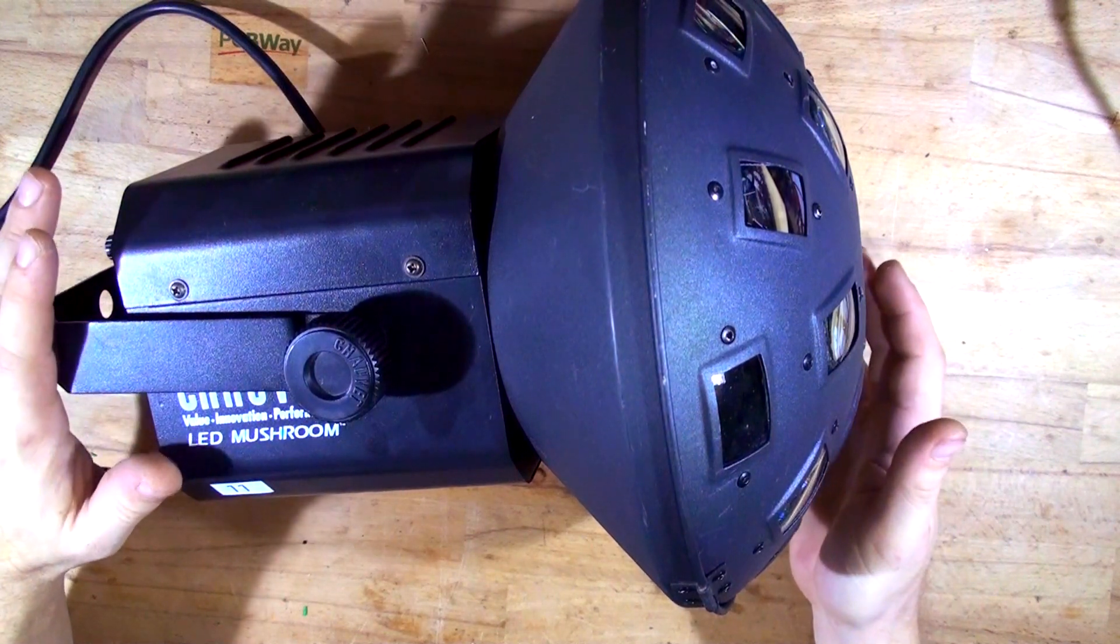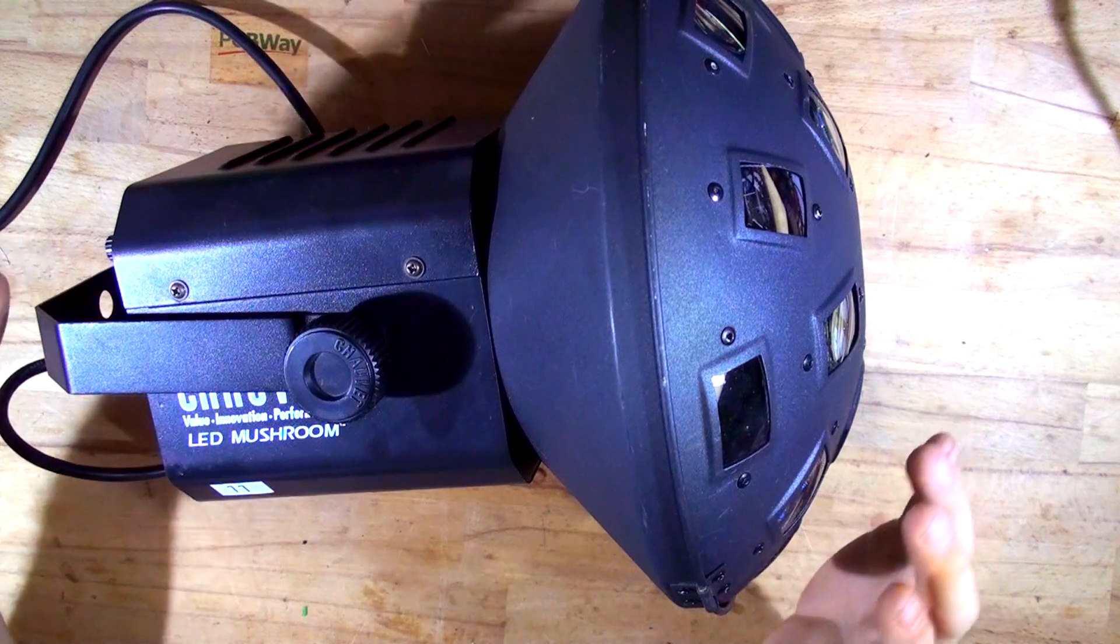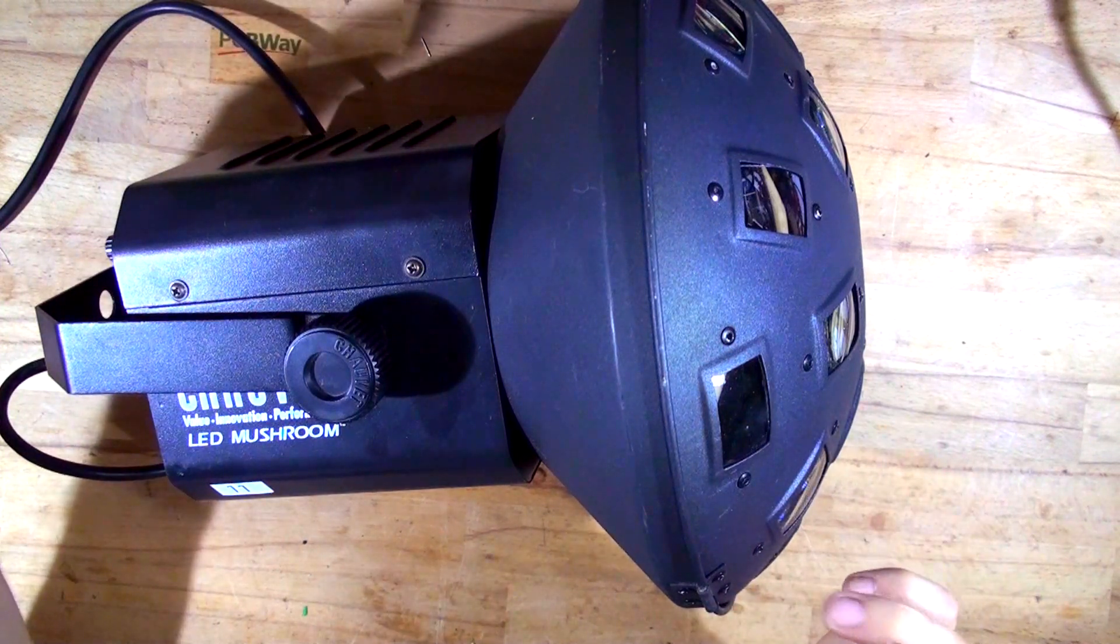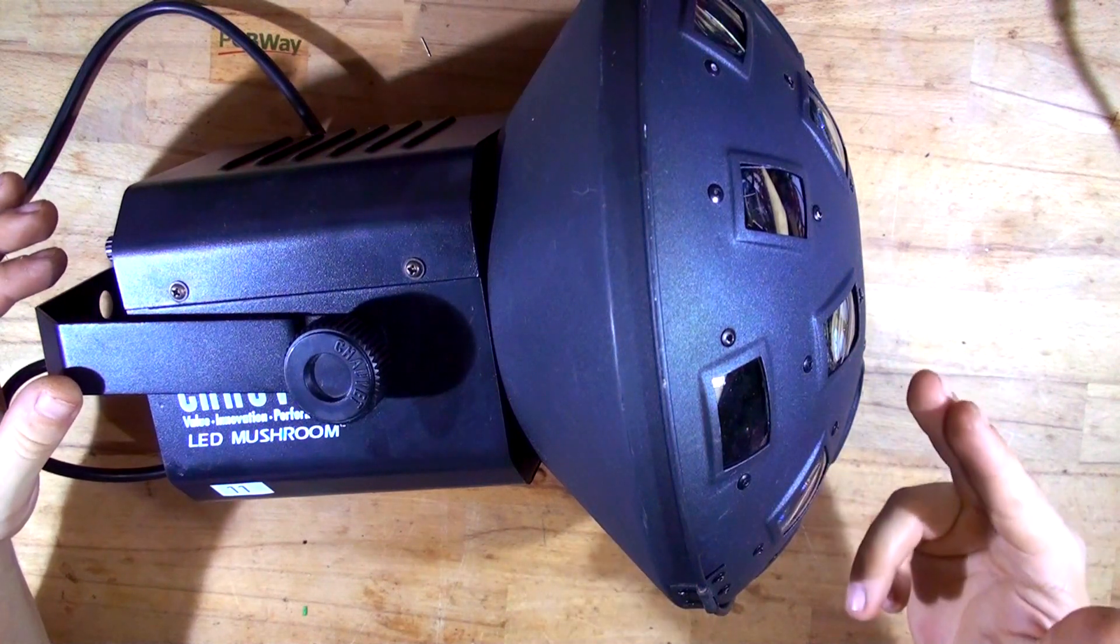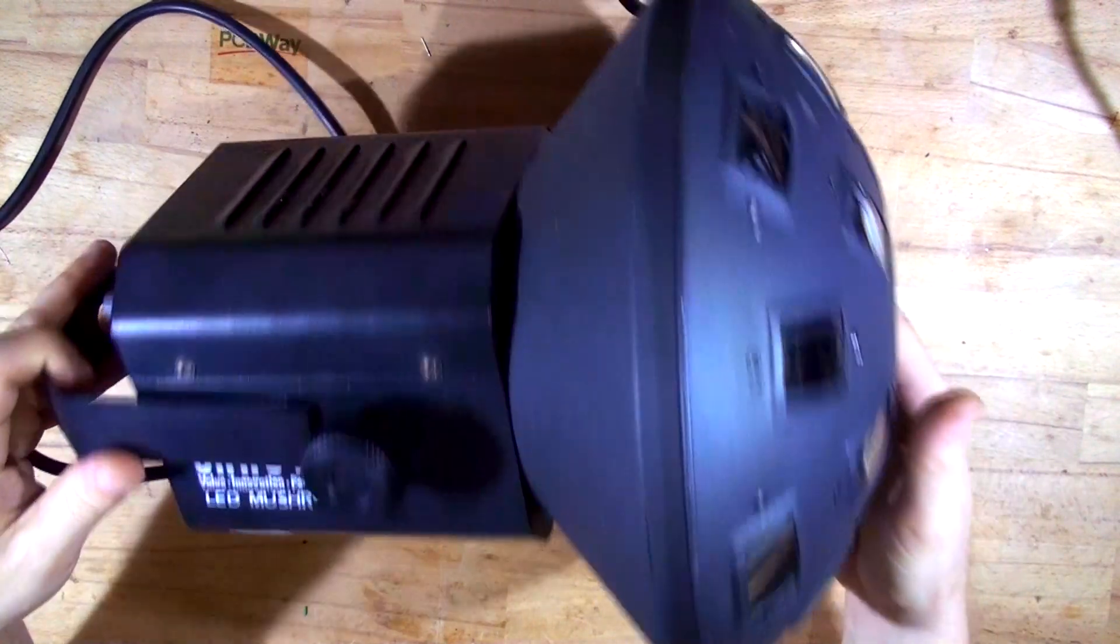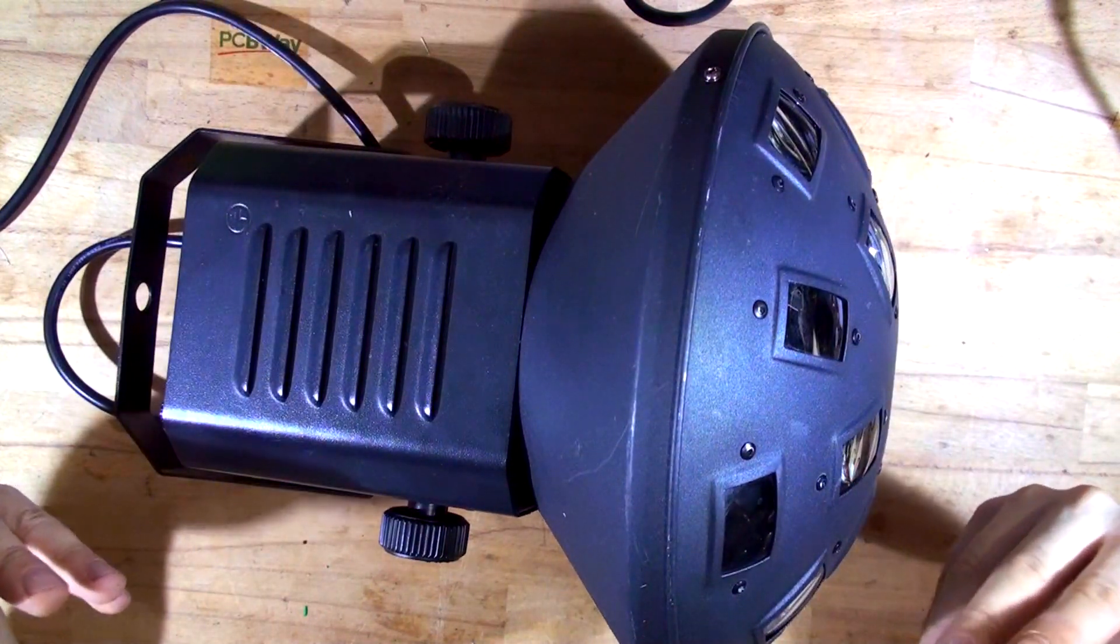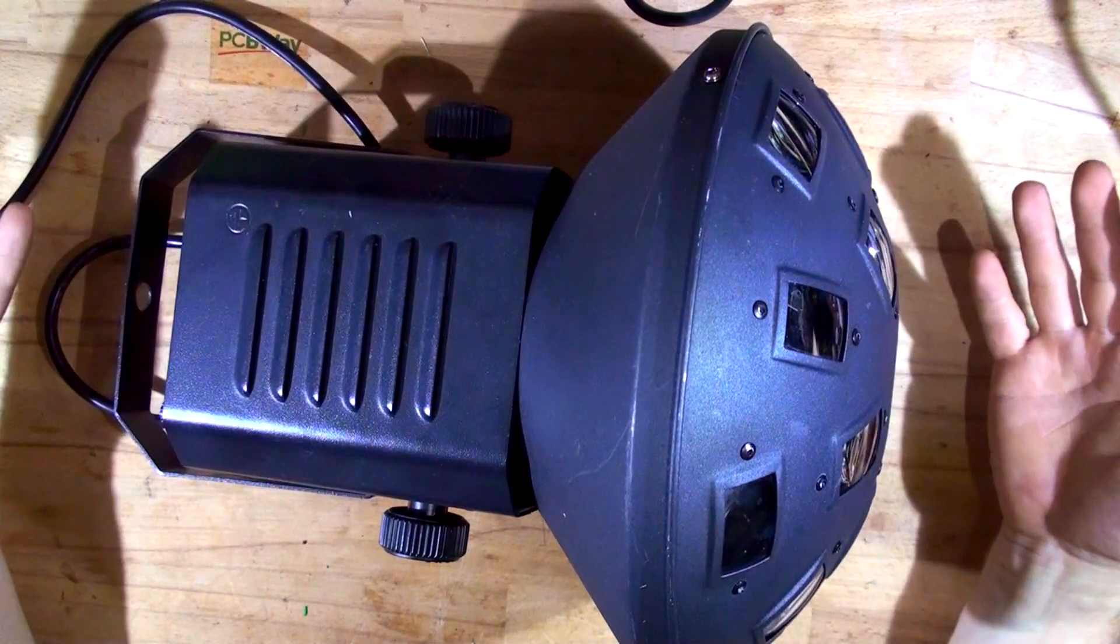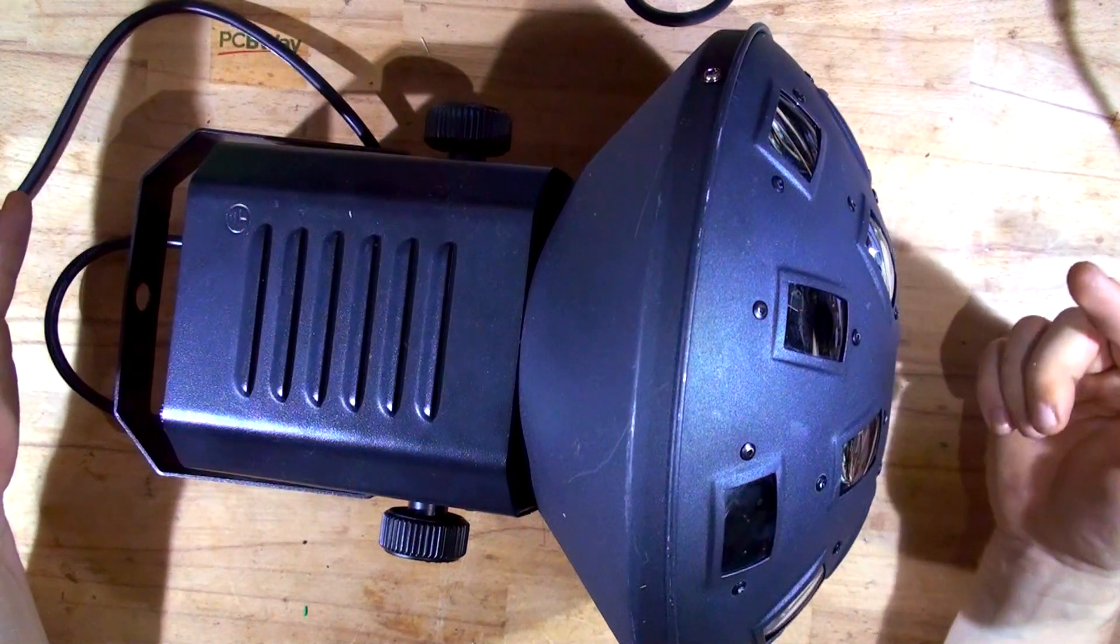So the problem with that is it's continuously turning the motor and even though if you put it in sound mode it's got sound activation so you clap your hands with the music it'll turn and change colors and turn the other way, but what's happening with this one it just continuously turning even if there is no sound or even if you practically turn it off and put it in DMX mode and put every value to zero it'll still keep turning the motor in one direction.